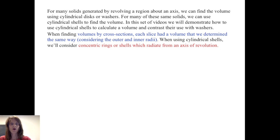You will recall that when finding volumes by cross-sections, each slice had a volume that we determined the same way when considering the outer and inner radii. When using cylindrical shells, we'll consider concentric rings or shells which radiate from an axis of revolution.